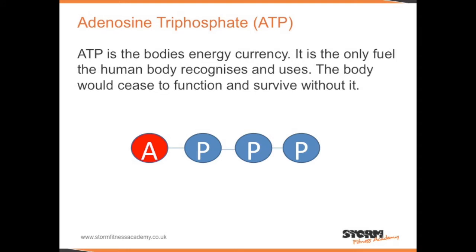Adenosine triphosphate, or ATP for short, is the body's energy currency. It is the only fuel the human body recognises and uses; the body would cease to function and survive without it. ATP has 4 molecules: 1 molecule of adenosine and 3 molecules of phosphate.